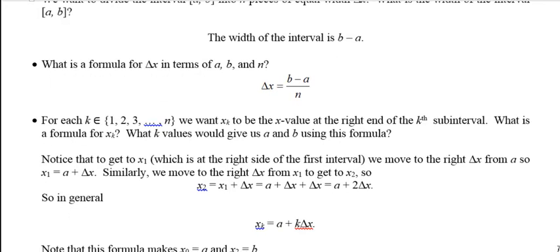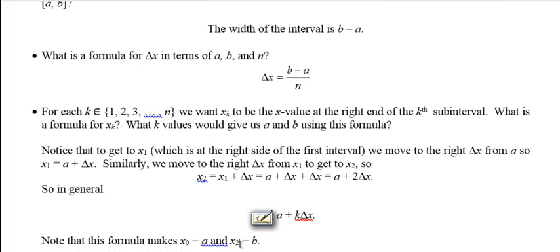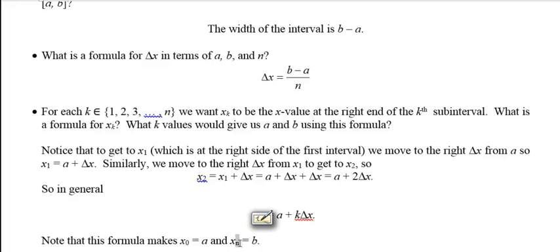So in general, we come up with a formula: x_k equals a plus k Δx. So notice if you plug in k is 0, this would make x₀ just a, which is not used for a right Riemann sum, but we will use it for a left Riemann sum. And x_n is b. Not x₂, but x_n. The last one is b.